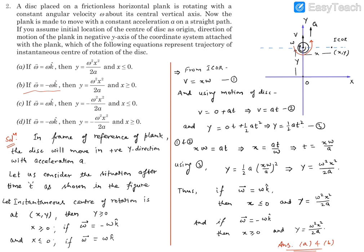Because of this we will get this relation ultimately, that means y is still omega square x square by twice a. But you'll find since the sense of rotation is this, instantaneous center of rotation has to be on this quadrant.